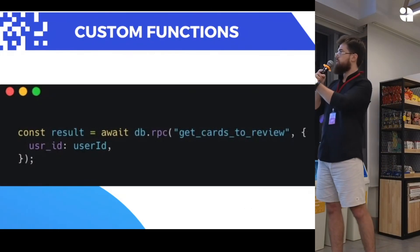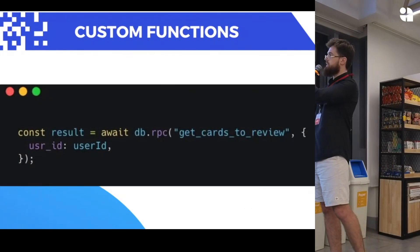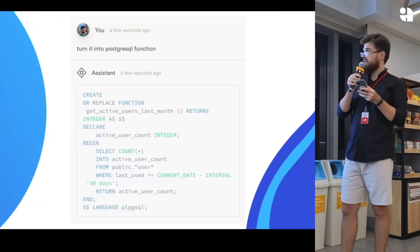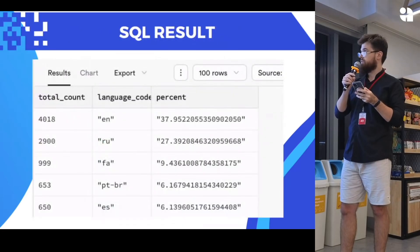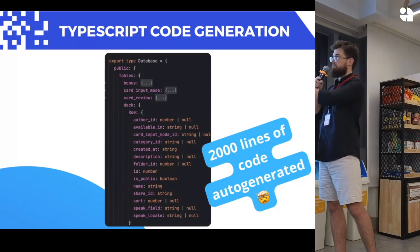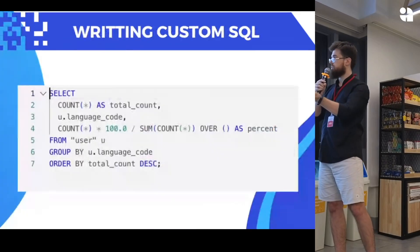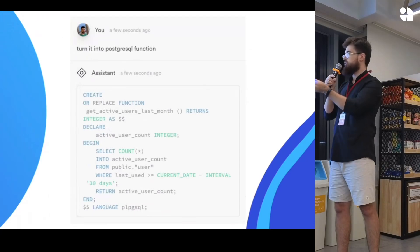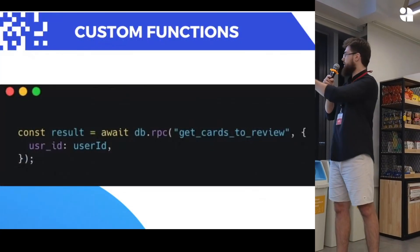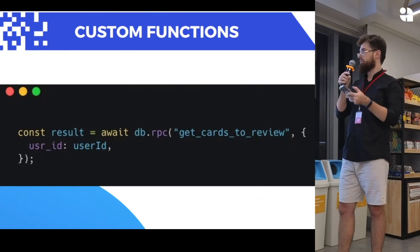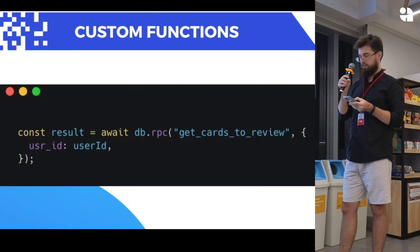Once the PostgreSQL function is available, you can call it in your code using Supabase.rpc, then specifying the name of the function. Because Supabase generates all the types for you, you get not only the tables but also the functions — with correct function signatures and return types — all perfectly typed for TypeScript.